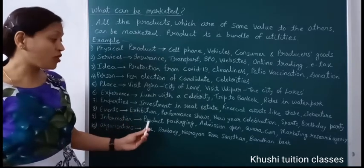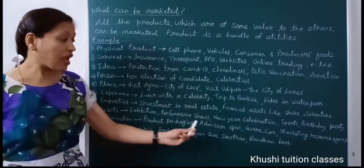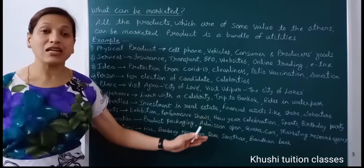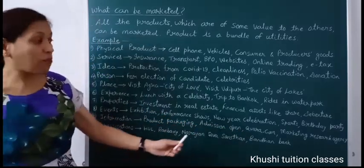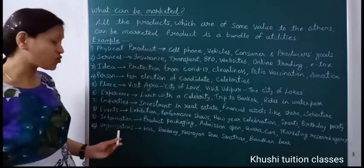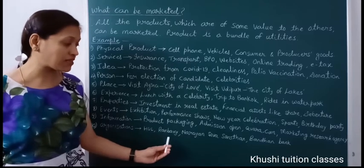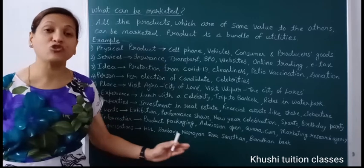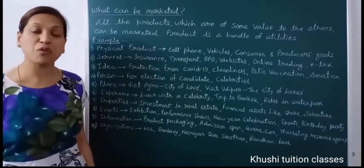The ninth is information — every product's packaging has labeling with full information about the product and company. Schools, colleges, and universities publish 'admission open' information on news channels, television, and newspapers. Websites like Quora provide complete information. Marketing research agencies can provide required information for a charge. The last is organizations — companies market themselves to strengthen their public image, such as banks celebrating anniversaries and insurance companies marketing themselves so that people purchase their products.